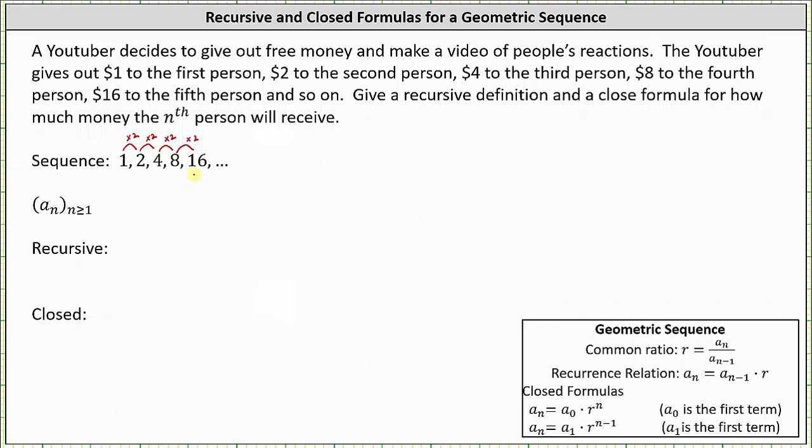The recurrence relation for any geometric sequence is a sub n equals a sub n minus 1 times r, which means in our case the recurrence relation is a sub n equals a sub n minus 1 times 2. Or if we prefer, we can say a sub n equals 2 times a sub n minus 1.